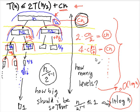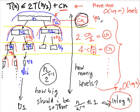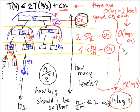Since there are O(log n) levels and we spend cn on each, the total running time is O(log n) times cn, which is O(n log n) as claimed. When we talk about divide and conquer algorithms, we will look at this analysis more and more — there will be a lot of examples of how to analyze this. This should give you the idea of how to think about recursive algorithms. So merge sort's running time is O(n log n). Thank you. To be continued.